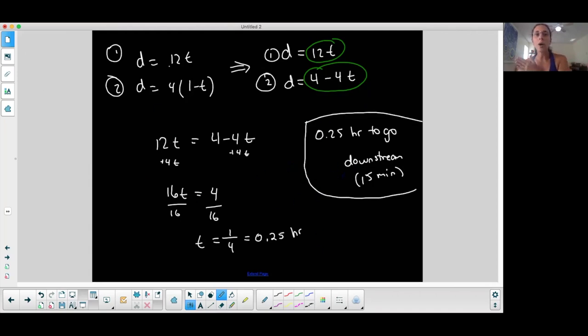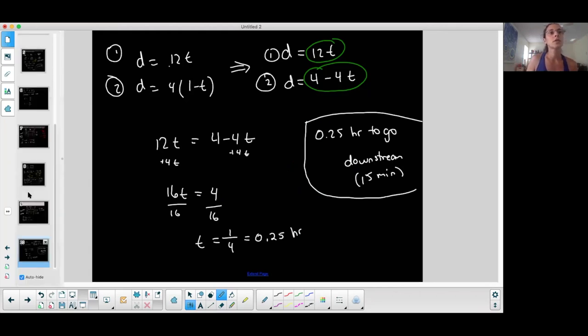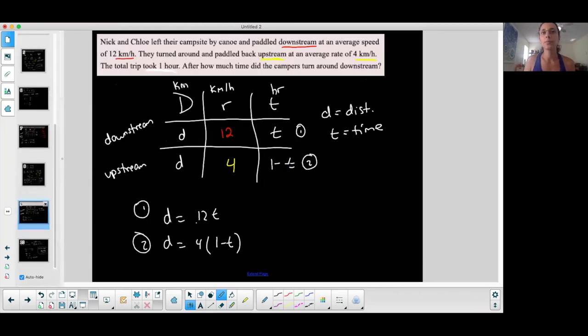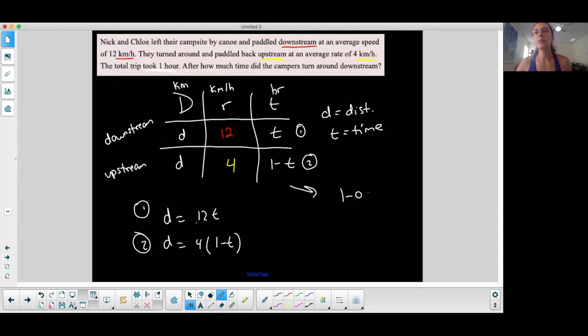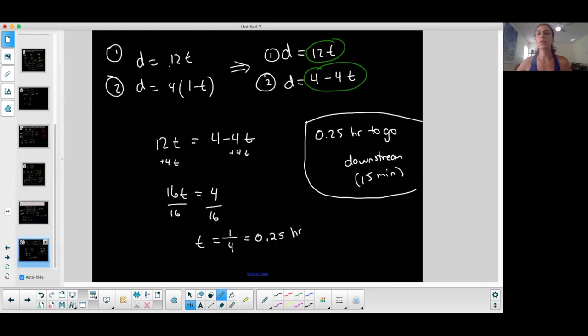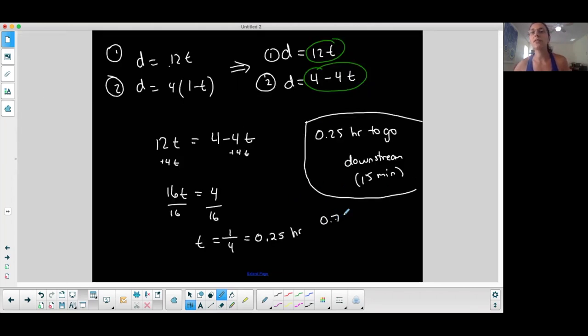And then how long did it take them to go upstream? Well, if it took a total hour to go upstream, what is 1 minus T? That's fine. 1 minus T, which was 0.25, is equal to 0.75. It took three quarters of an hour to go upstream. So let's go to three quarters of an hour, 0.75 of an hour to go upstream, or 45 minutes, depending on how you want to represent.